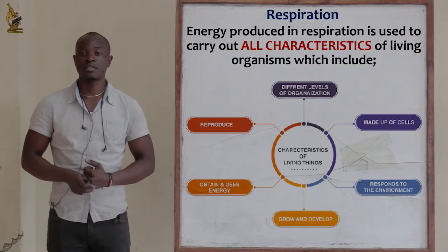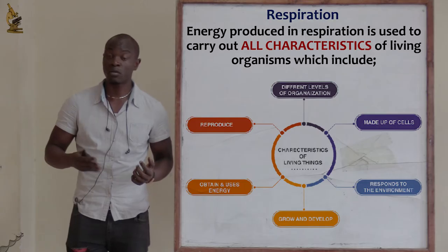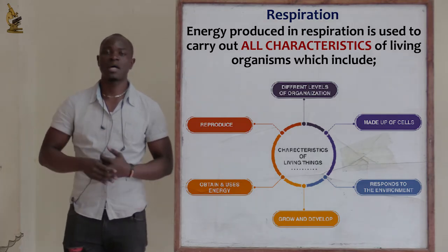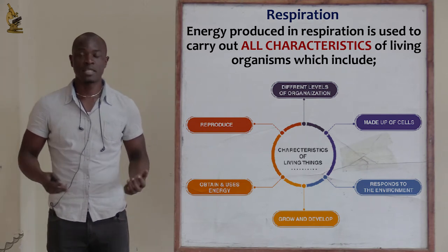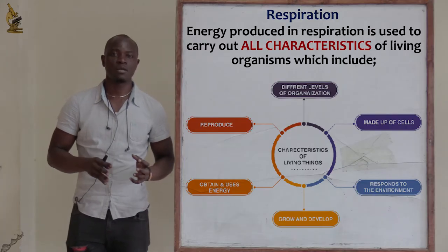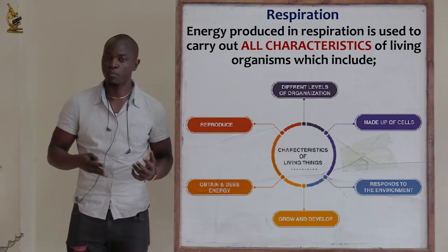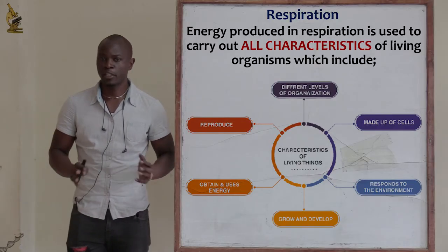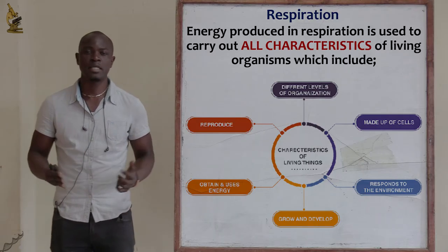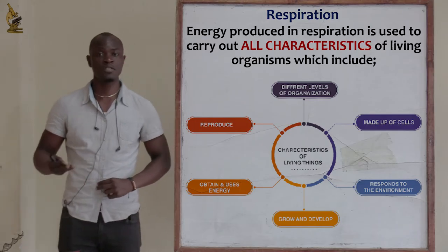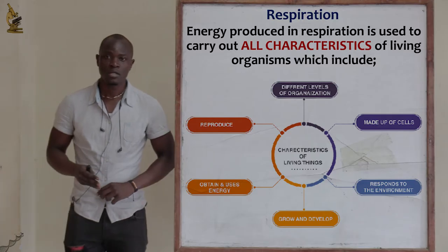This energy released during respiration is used to carry out different characteristics of living things — for example growth and development, movement and locomotion, nutrition, and irritability. Respiration occurs all the time, and if stopped, cellular activities will be disrupted in the body due to lack of energy. All cells in the body require energy to perform their specific functions. If respiration stops indefinitely, most cellular activities will be disrupted because there won't be energy to facilitate physiological and physical processes, which may result in death.